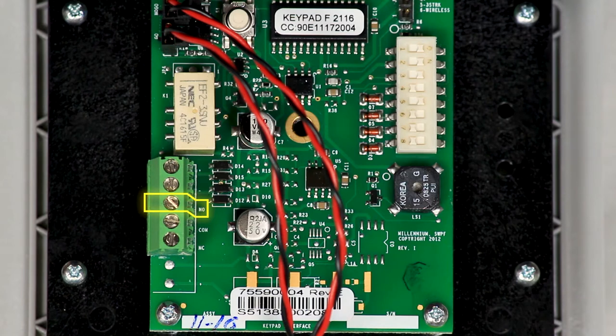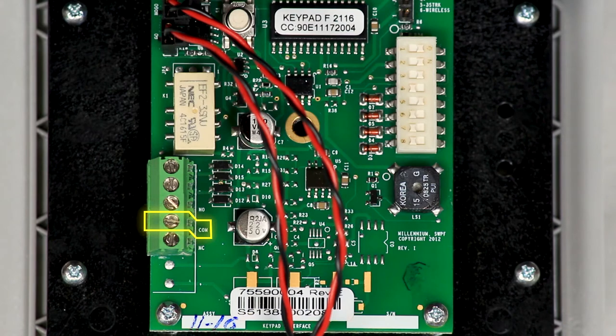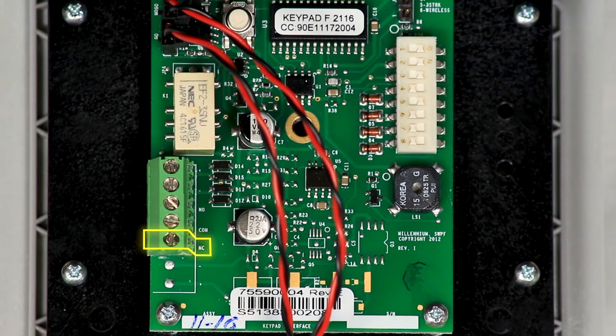The third terminal down is the normally open, which is labeled NO on the board. Next one down is the common, which is labeled COM, and the very last terminal is the normally closed, which is labeled NC.